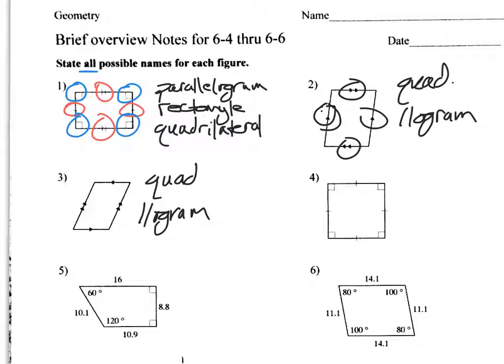All right, what about number four? Okay, number four, all the sides are equal. And we have four right angles. Okay, so that makes that a square. But remember, a square is everything.